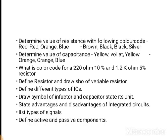For two marks: define resistor and draw the symbol of a variable resistor. Then define different types of ICs (integrated circuits). Draw symbol of inductor and capacitor and state their units. State advantages and disadvantages of integrated circuits. List types of signals — that is square wave, ramp signal, triangular wave. Define active and passive components.